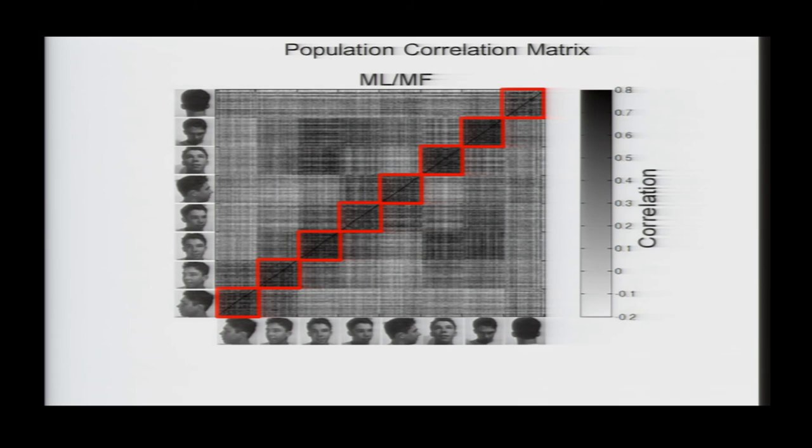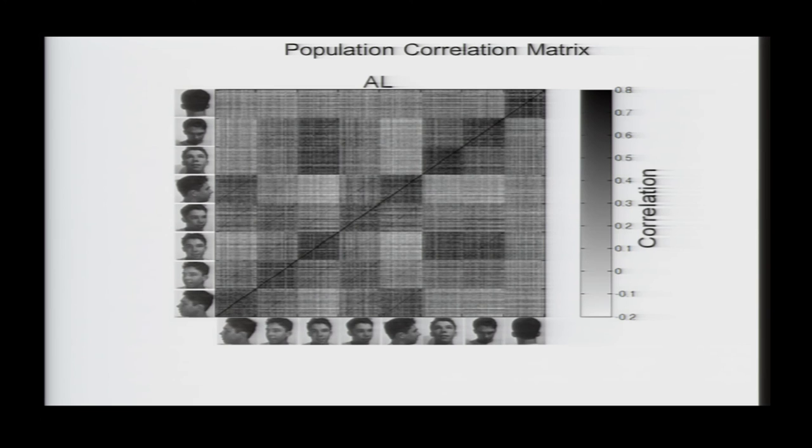When you move to AL, what you see is that, in addition to these squares along the diagonal, you see these squares here representing the correlation responses to mirror symmetric views. And then, very surprisingly to us, we also observed these diagonals within the squares. And that means that the cells as a population are coding the face identity invariantly across a subset of views.